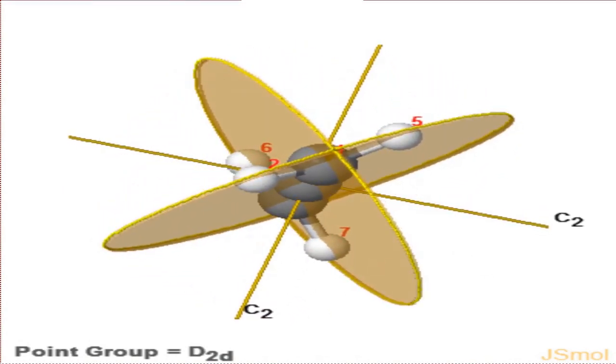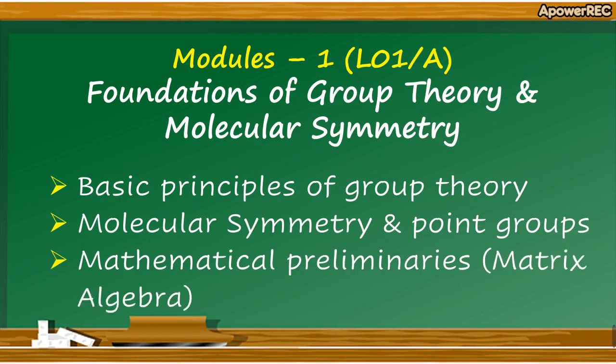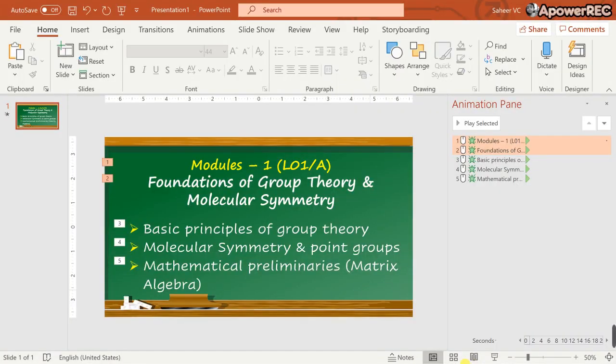At the end of the first module, I will discuss some mathematical preliminaries — mostly matrix algebra — which are required in the next few modules. One important point is that each symmetry operation can be represented in terms of a matrix, and hence matrix manipulation and matrix algebra come into play in most group theoretical calculations.